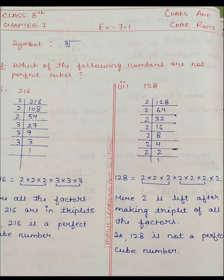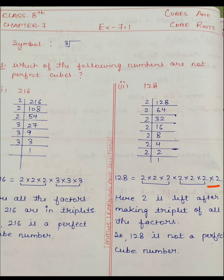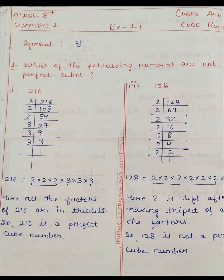Second number is 128। 128 के prime factors: 128÷2=64, 64÷2=32, 32÷2=16, 16÷2=8, 8÷2=4, 4÷2=2, 2÷2=1। 2 कुल 7 times है। पहला triplet complete, दूसरा triplet complete, लेकिन एक 2 extra बचा। Here 2 is left after making triplet of all the factors, so 128 is not a perfect cube number।